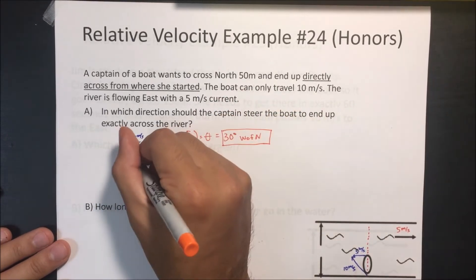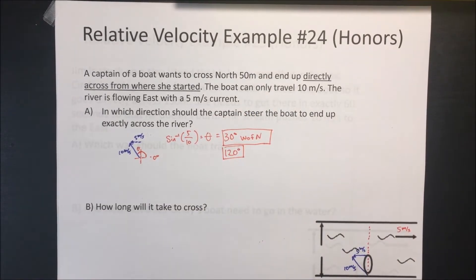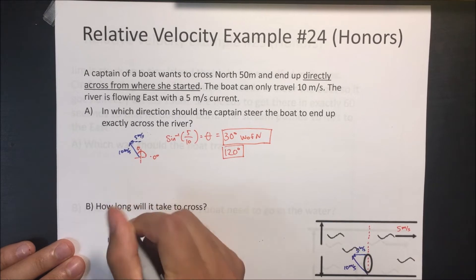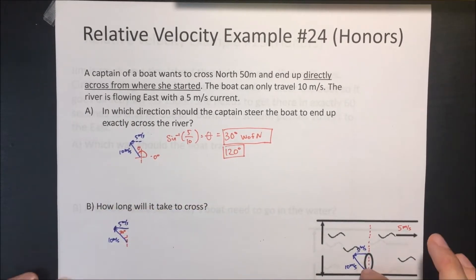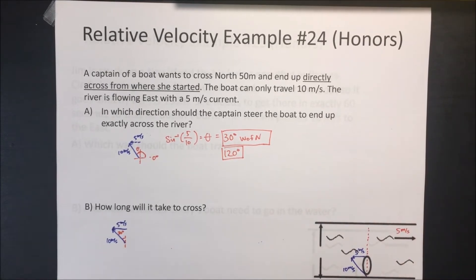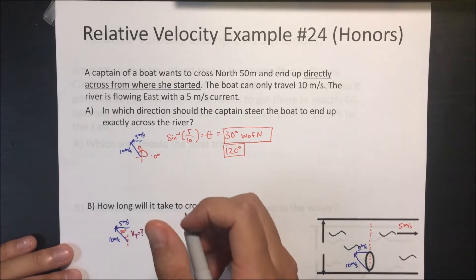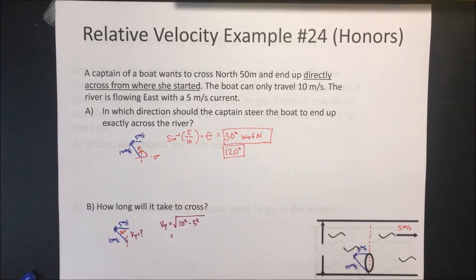This can also be expressed as 120 degrees. How long will it take to cross? The boat is pointed at an angle, going 10 meters per second, with the y-component canceling the 5 m/s current component. We need to find the velocity in the y-direction using the Pythagorean theorem: vy = √(10² − 5²).